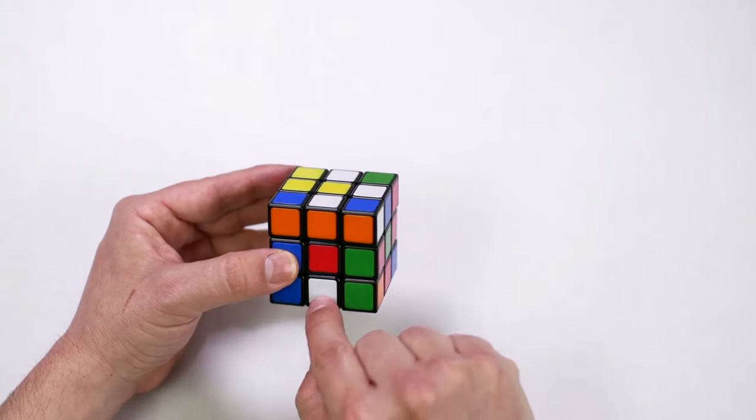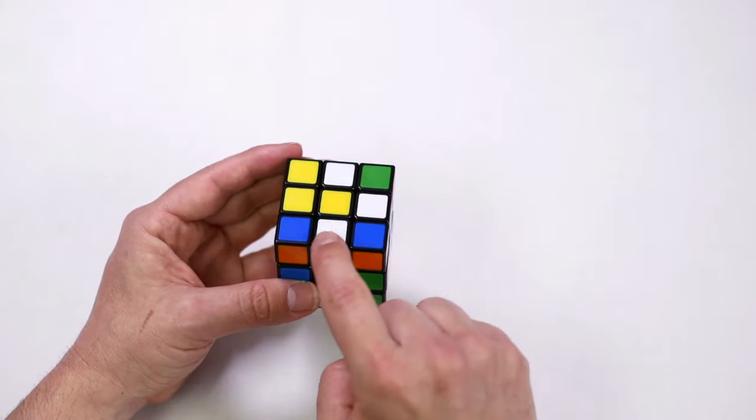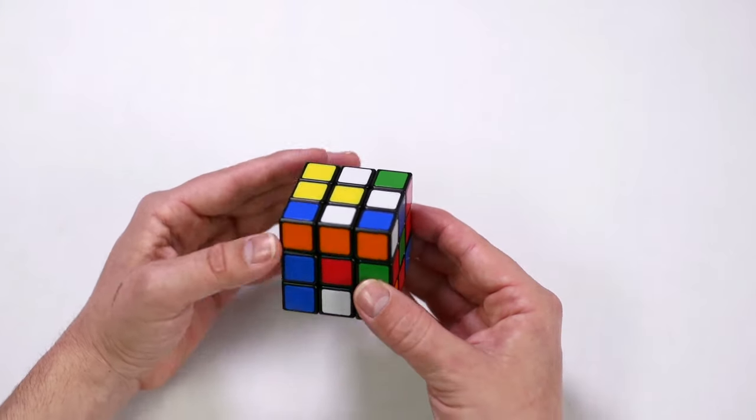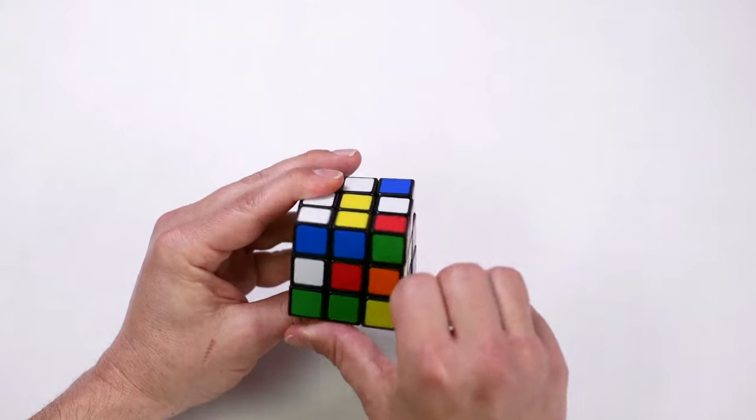Let's look if our white edge piece is on the bottom layer. What we need to do is turn the face twice. Be careful not to bump any pieces that we already have in position. So we just rotate the up face and then we can turn the face twice.